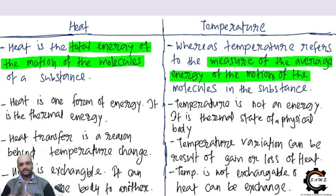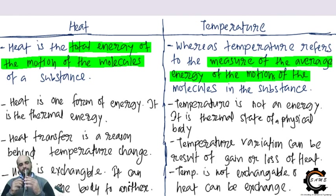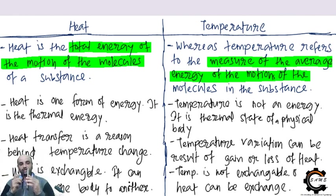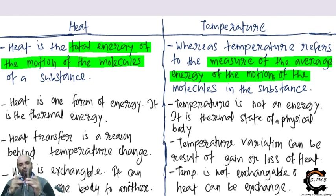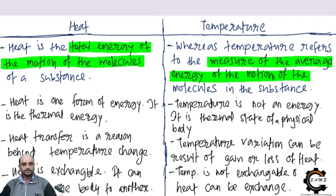Suppose I have two bodies — one hot and one cold. When I bring them closer, if there is a temperature difference, heat will transfer from the hot body to the cold body, just like voltage transfers due to a potential difference. Similarly, heat flows from hot to cold only when there is a temperature difference.